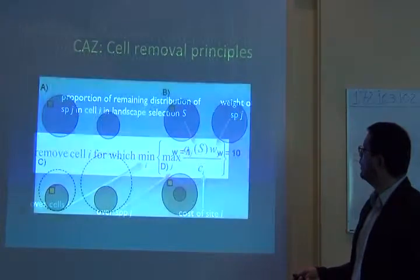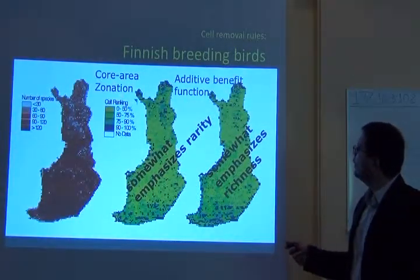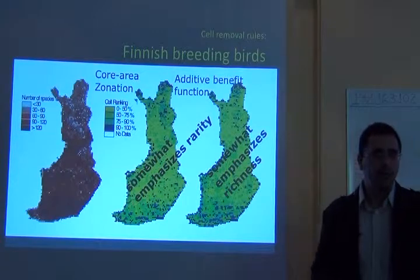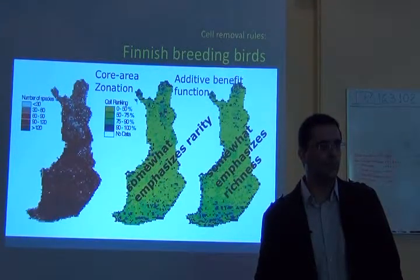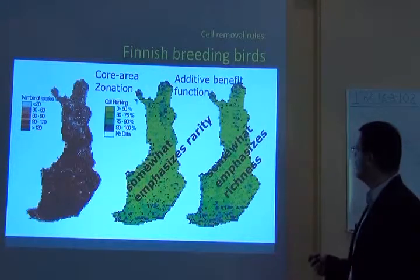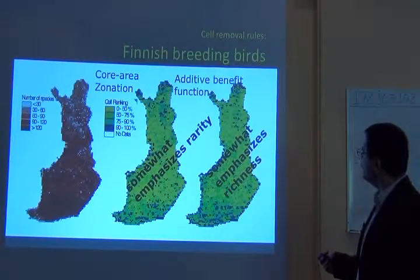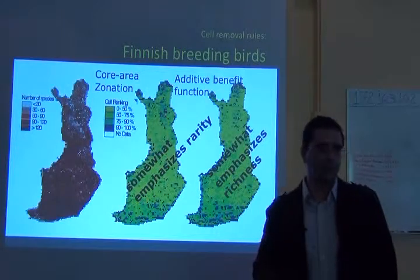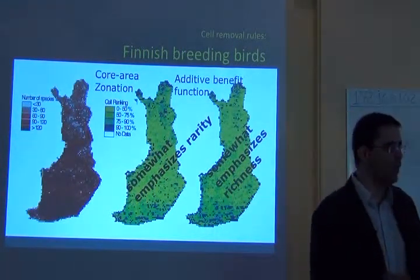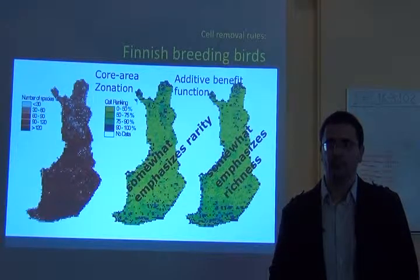Core area zonation somewhat emphasizes rarity — it looks for species with smaller distributions and gives them more importance. Additive benefit function somewhat emphasizes richness — it looks for sites with more species because it sums all the values for all species.